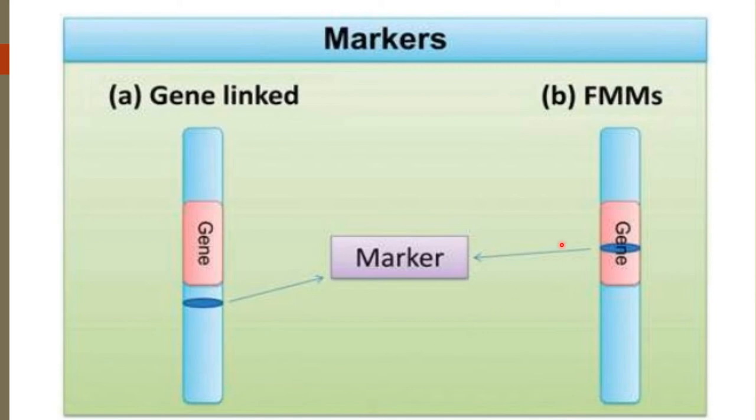See, if you see this picture, this is a gene and we can see the molecular marker here which is linked to this gene. Whereas in case of functional markers, they usually present or developed from polymorphic site within the genes that causally affect target trait.